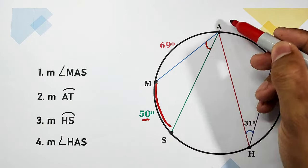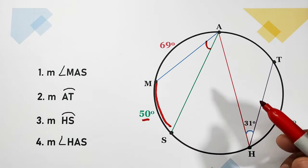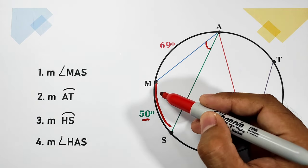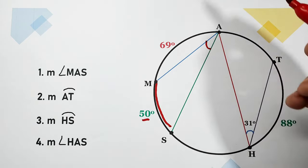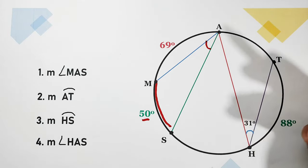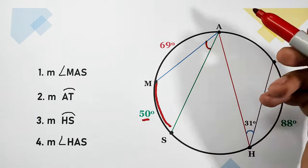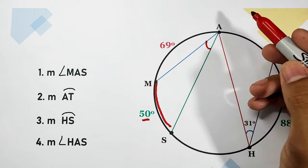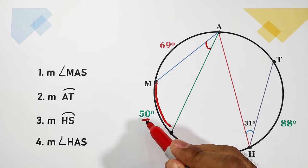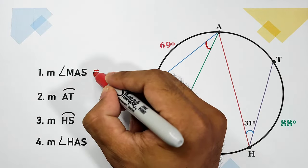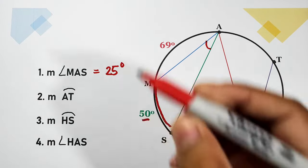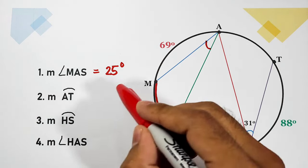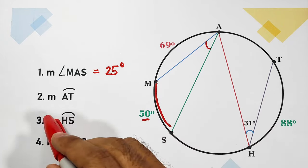Since angle MAS is an inscribed angle, and according to the definition, the inscribed angle is one half of the intercepted arc. Our intercepted arc is 50 degrees. Therefore, the measure of angle MAS is one half of 50, which equals 25 degrees.